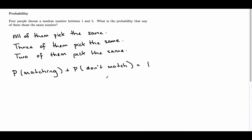That is, the sum of all probabilities equals 1. So we can see that the probability of them matching is 1 minus the probability that they don't match.